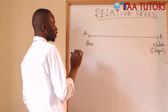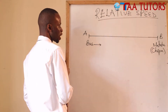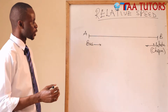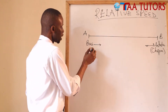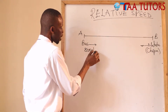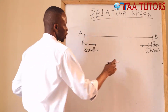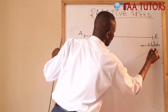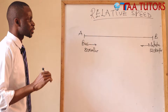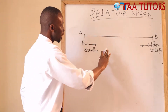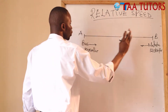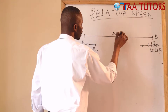The bus is moving towards town B and the matatu is moving towards town A — they are heading towards each other. The bus is moving at 80 kilometres per hour and the matatu is moving at 120 kilometres per hour. The distance between town A and town B is 500 kilometres.